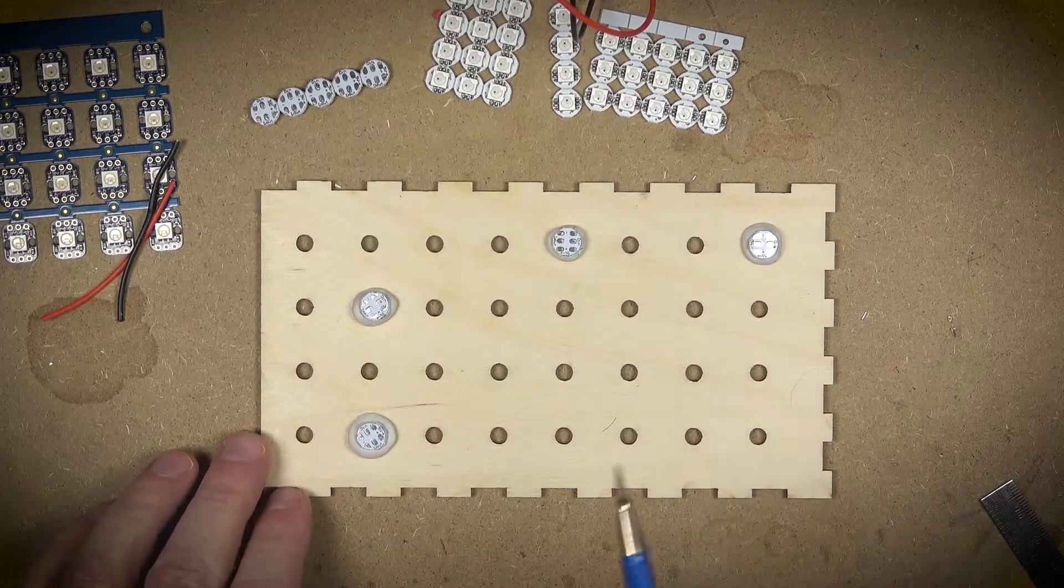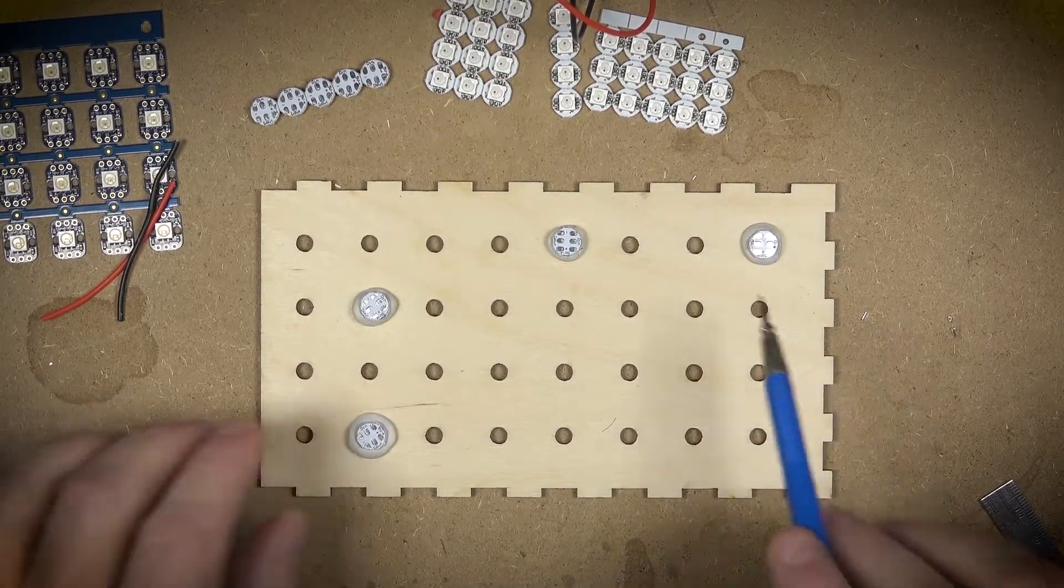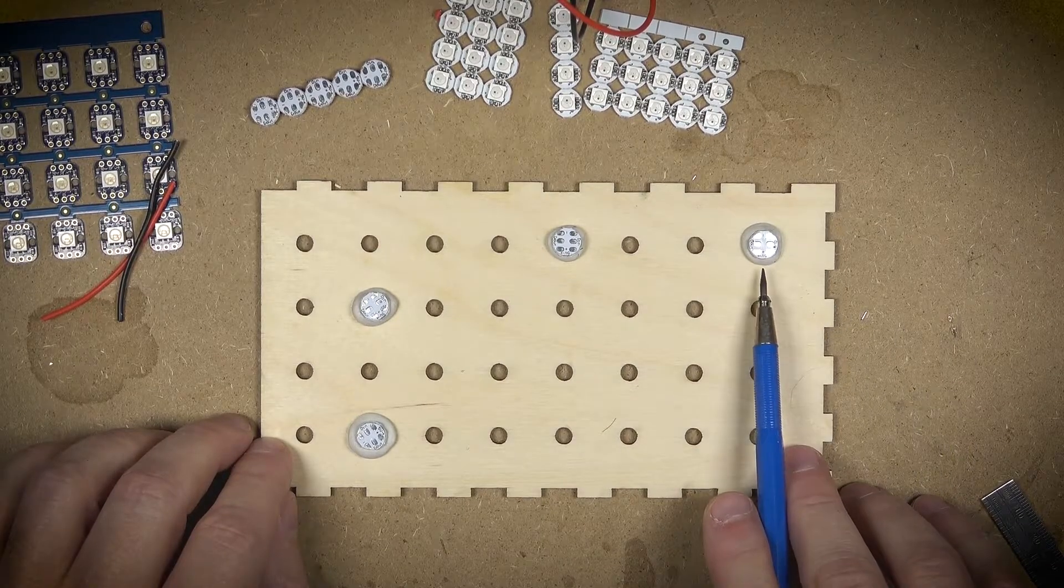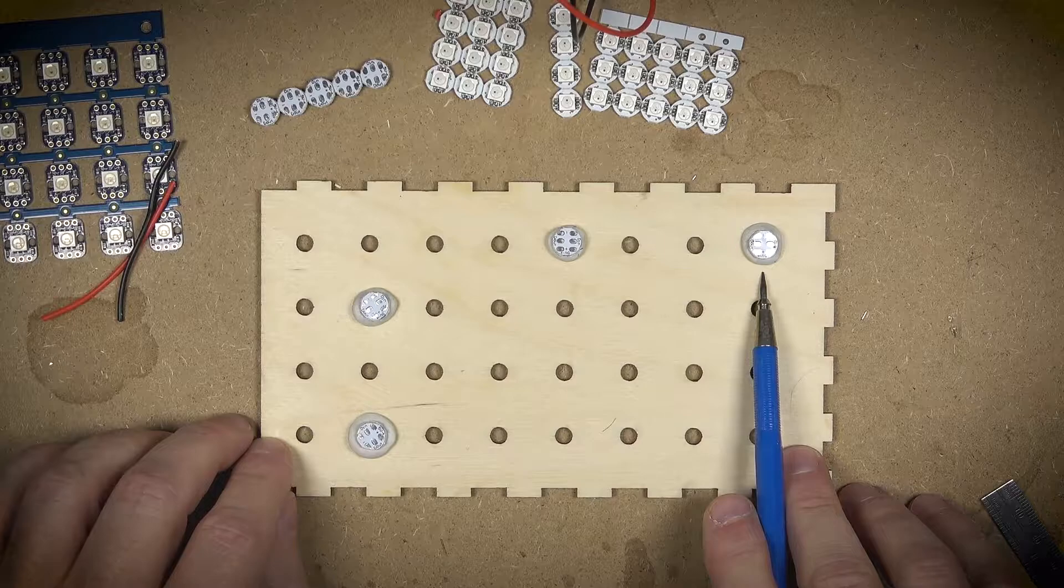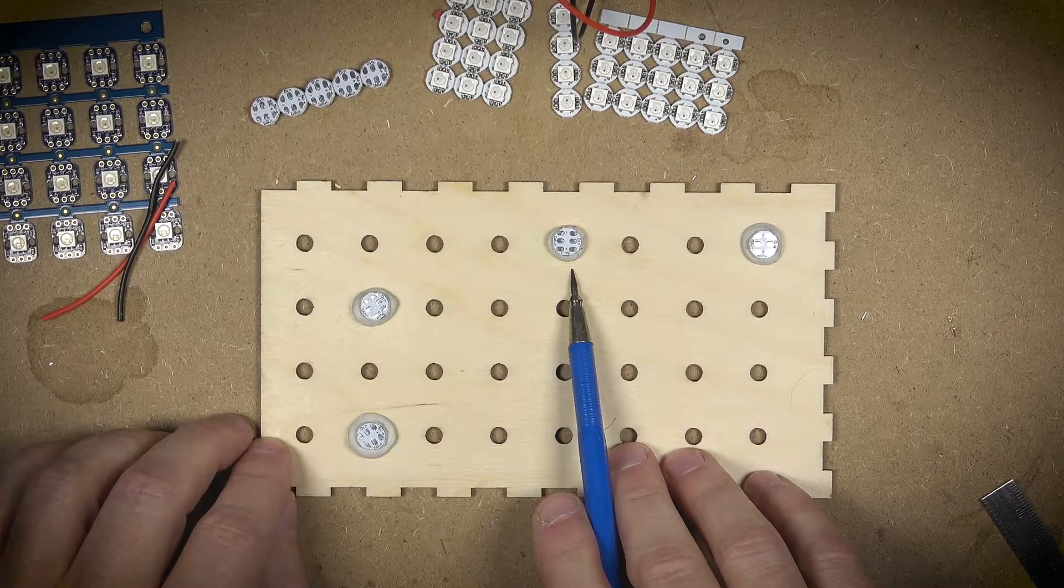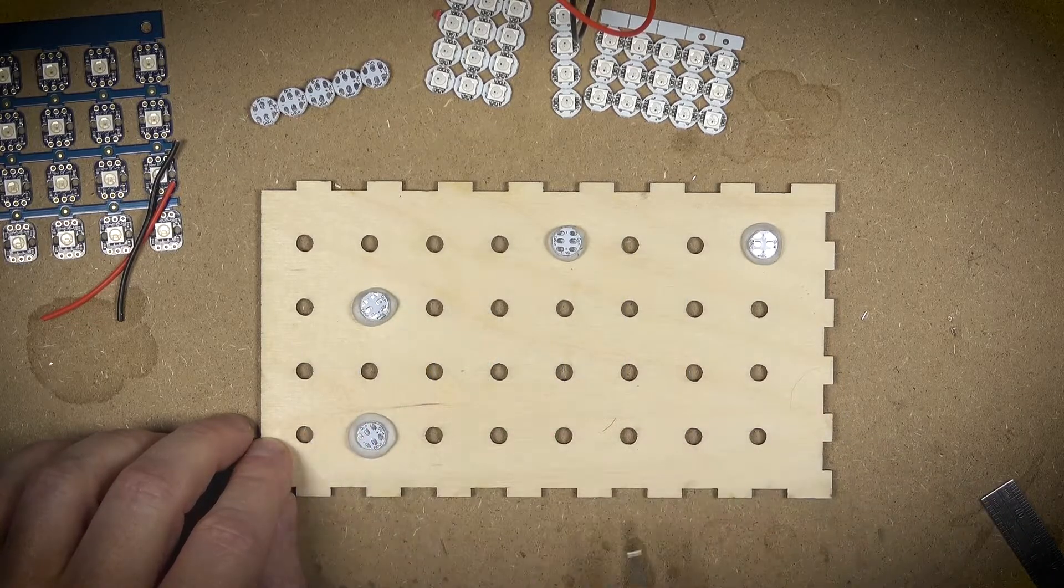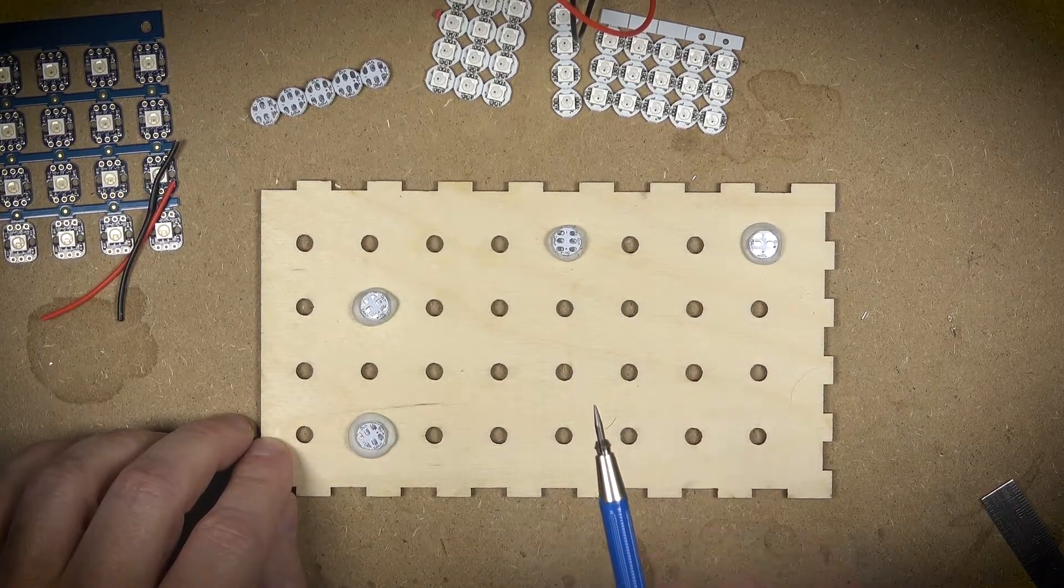As I said, NeoPixels are controlled by addressing them individually, so basically this is pixel zero and then this will be pixel one, LED one, LED two, LED three, and we're going to control that all in the Arduino code.